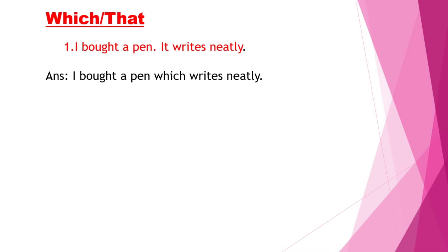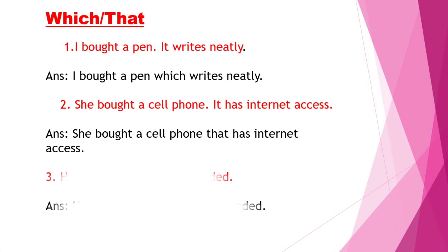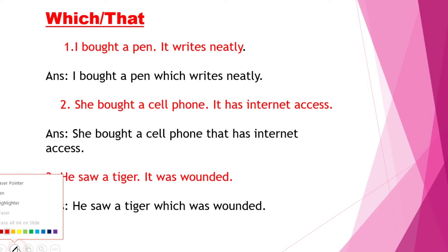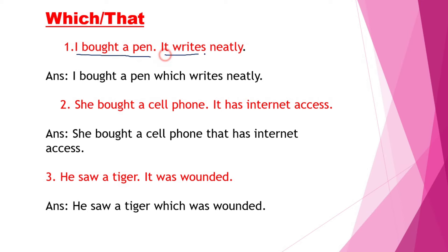Now let's discuss 'which' and 'that' — both are the same in meaning. Example: 'I bought a pen. It writes neatly.' Answer: 'I bought a pen which writes neatly.' Instead of the second subject 'it' in the second sentence and the full stop, we can use 'which'. That is the right answer. It belongs to Type 2.